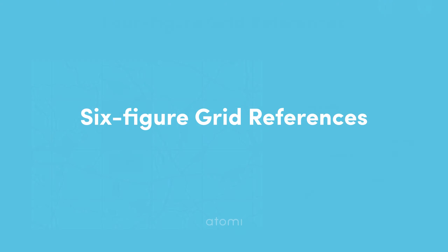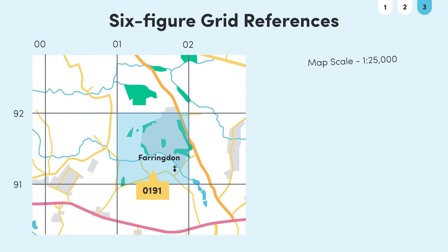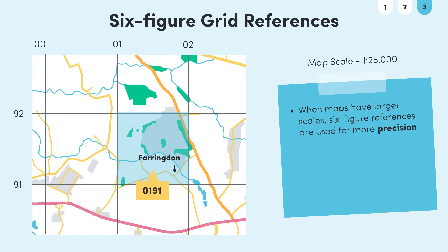Sometimes four figure grid references aren't precise enough, especially for maps with larger scales. This means that the grid cells are larger, showing more information, so you need to be more precise to exactly locate particular features. For example, if we take a larger scale view of the same area of Farringdon at a 1 to 25,000 scale, we can see that the grid cell is a bit too big to provide a precise location of the church.